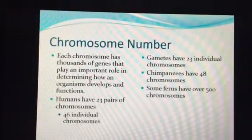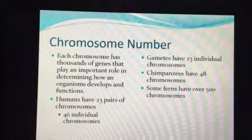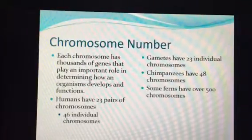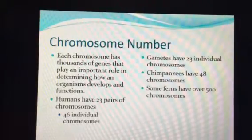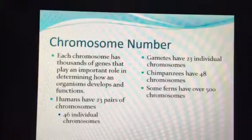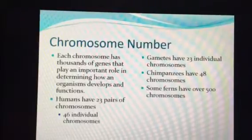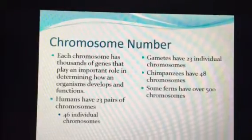Humans have 23 pairs or 46 individual chromosomes. A gamete — which is a sperm or an egg — holds 23 chromosomes for a human. They don't have a full set; they have a half set, called haploid. An individual like you has 46 chromosomes, or 23 pairs — half from your mom and half from your dad — and that is known as diploid, or double.